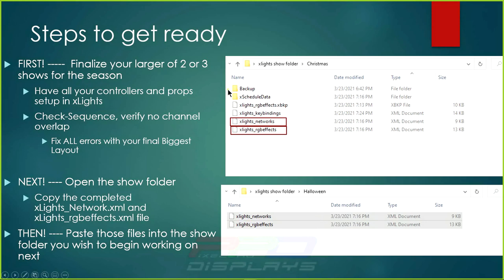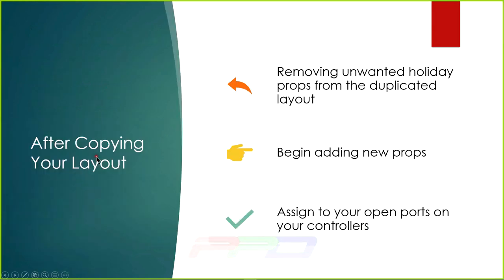All of the other files we talked about earlier are auto-generated. If you're going to do sequences with importing, mapping, and similar tasks, I recommend putting those files inside these folders. If you put your media in the xLights show folder above your Christmas or Halloween subfolders, xLights may not find it automatically — and xLights does look for things automatically. I'll talk about that in a moment.